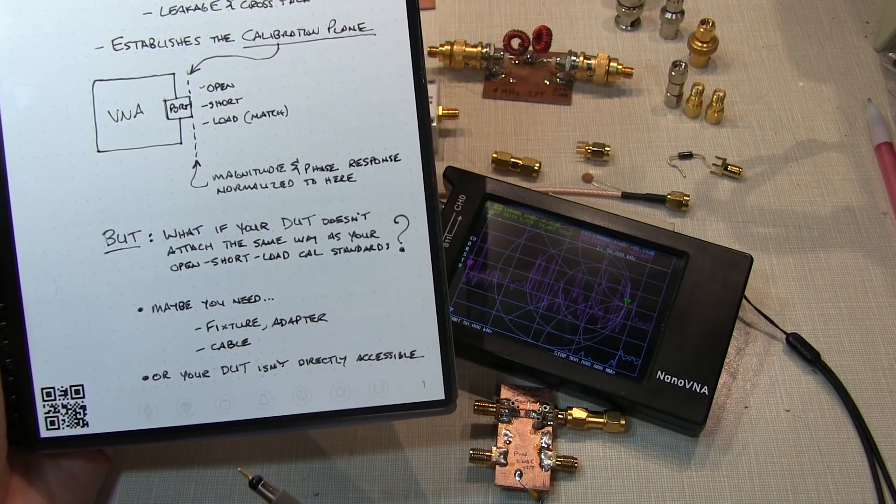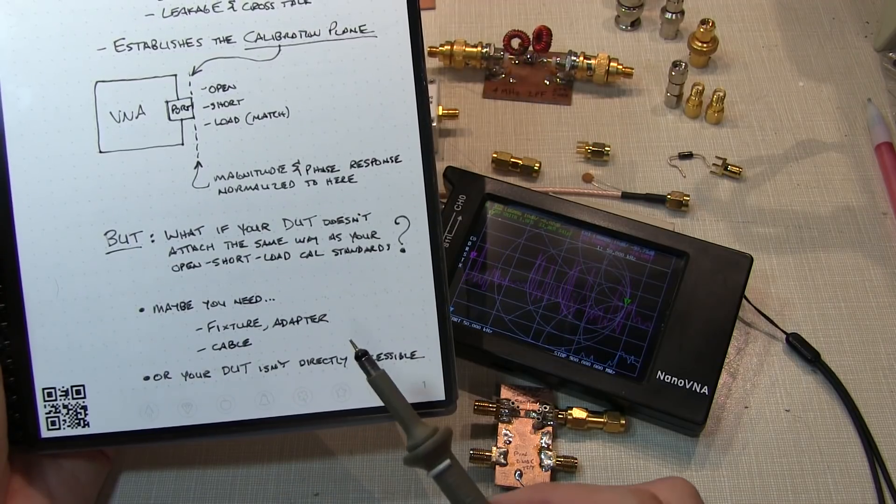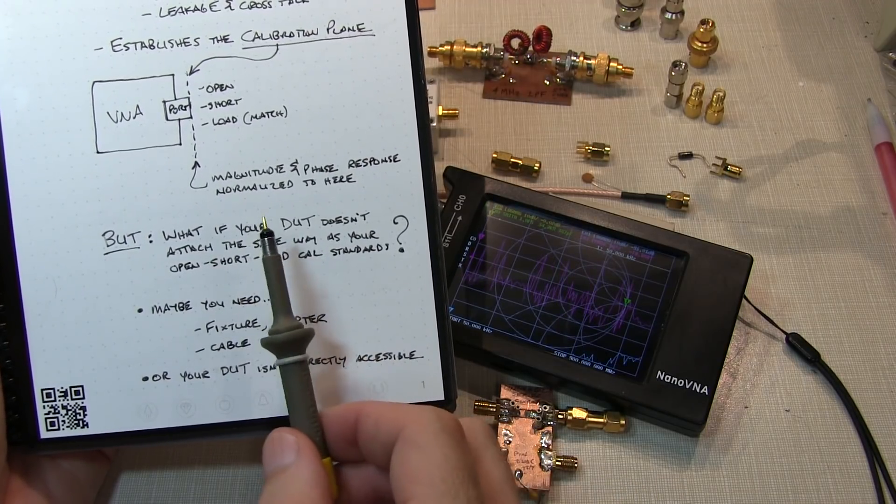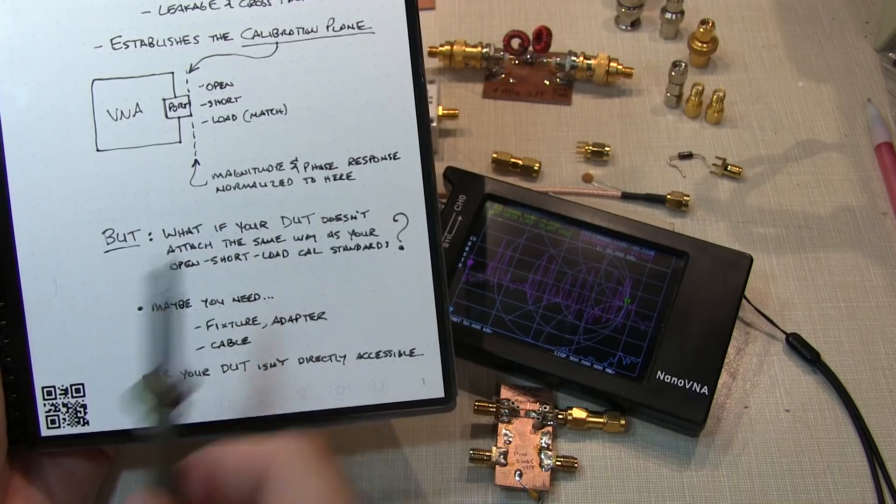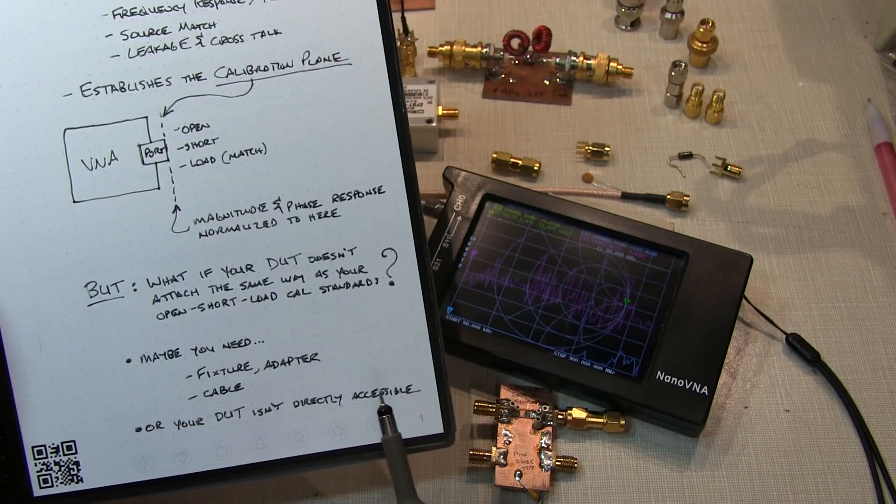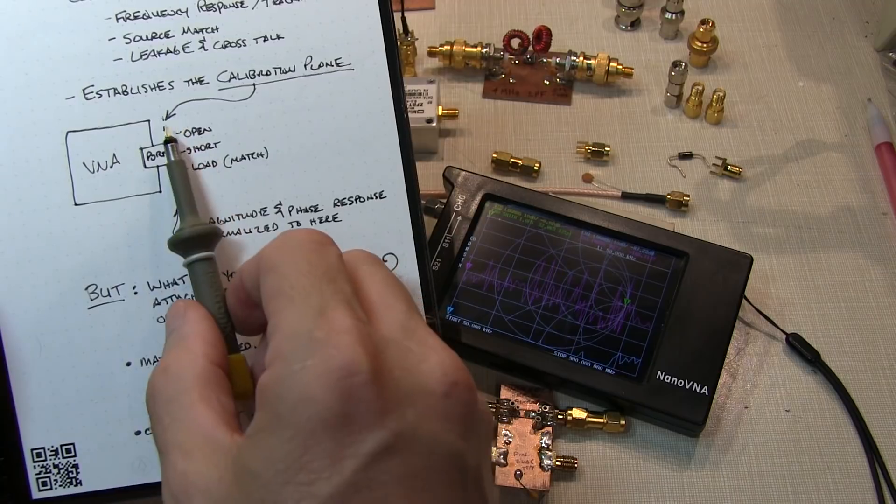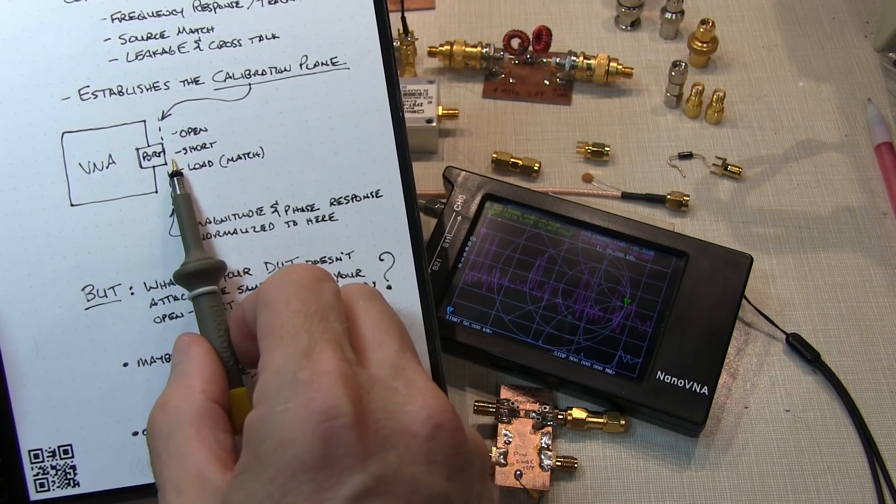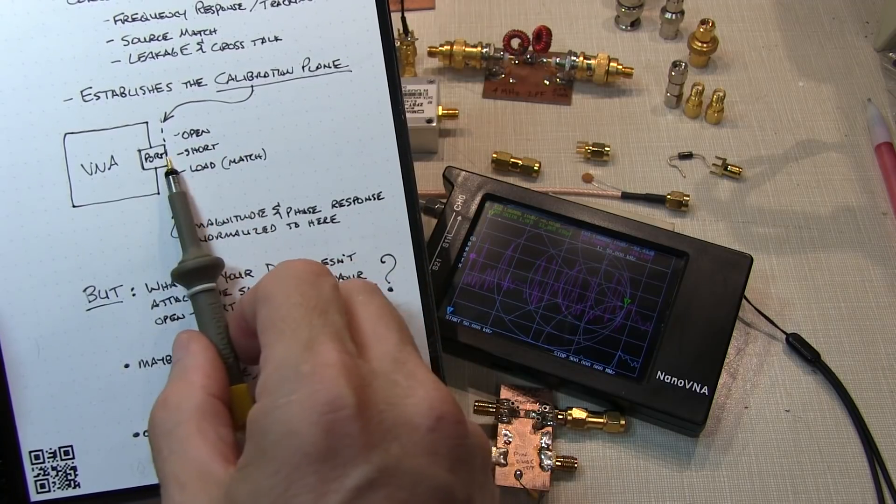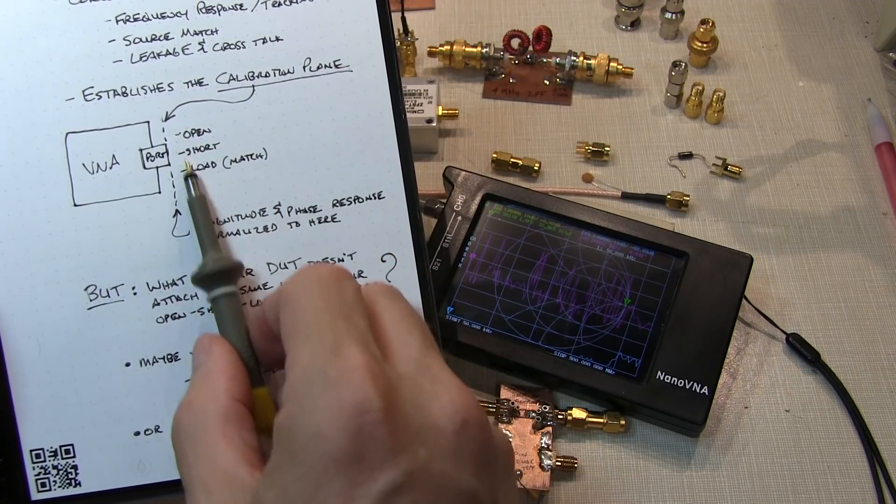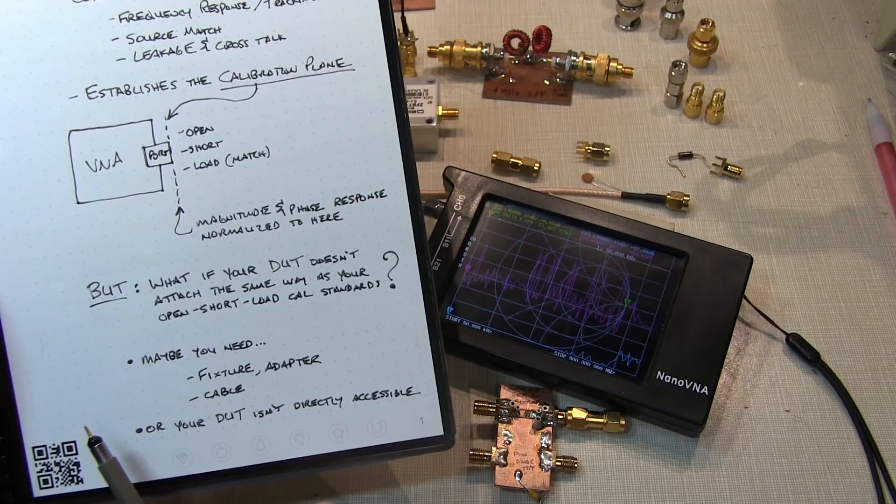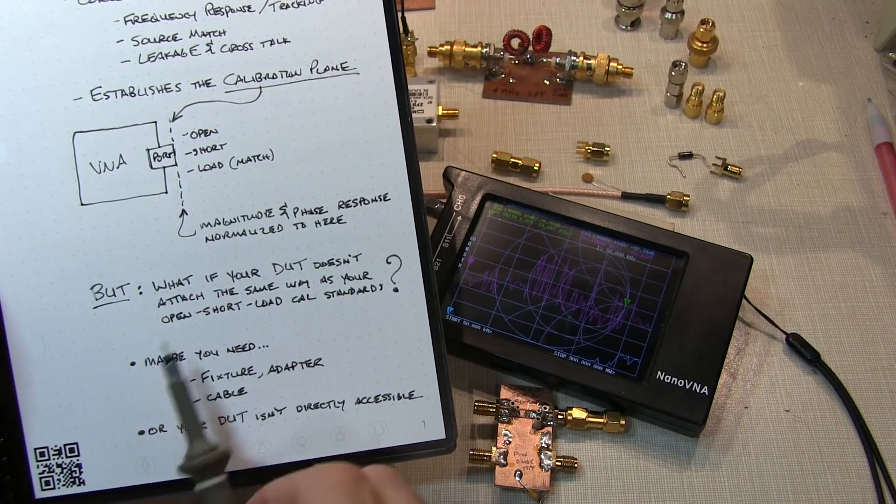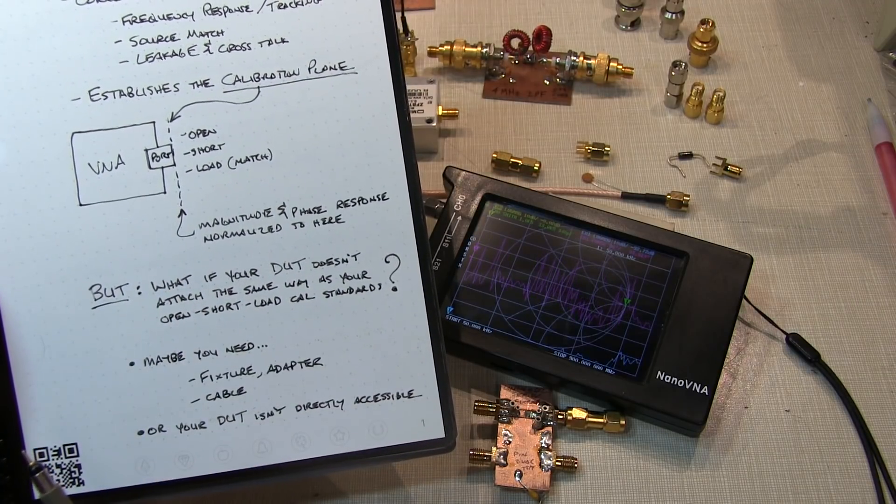Well, this actually could present a problem, potentially, if you want to accurately measure the complex impedance looking into your device. The reason for this is that each of these devices that you add to the VNA port beyond where you made your calibration will add an additional delay or phase shift compared to where that calibration was done. And that is essentially going to alter the impedance that is seen by the VNA.